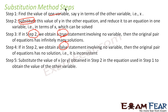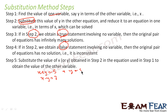Let me explain with an example. Suppose we have x plus y equals 5 as equation one, and x minus y equals 7 as equation two. The first thing we do is find the value of one variable — for example, from equation one: y equals 5 minus x. We've now found the value of y in terms of x.